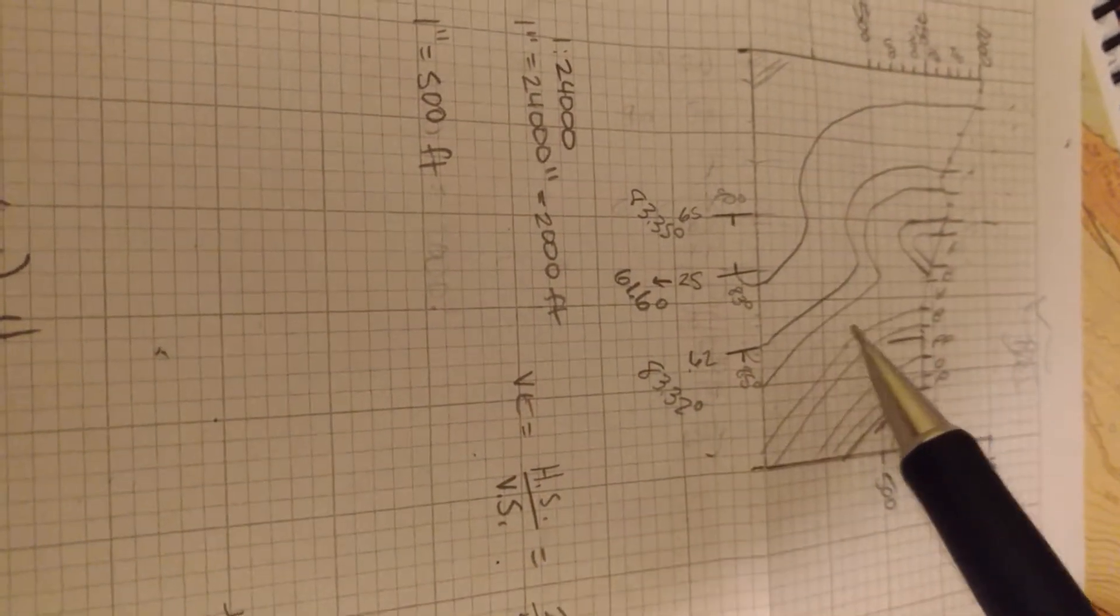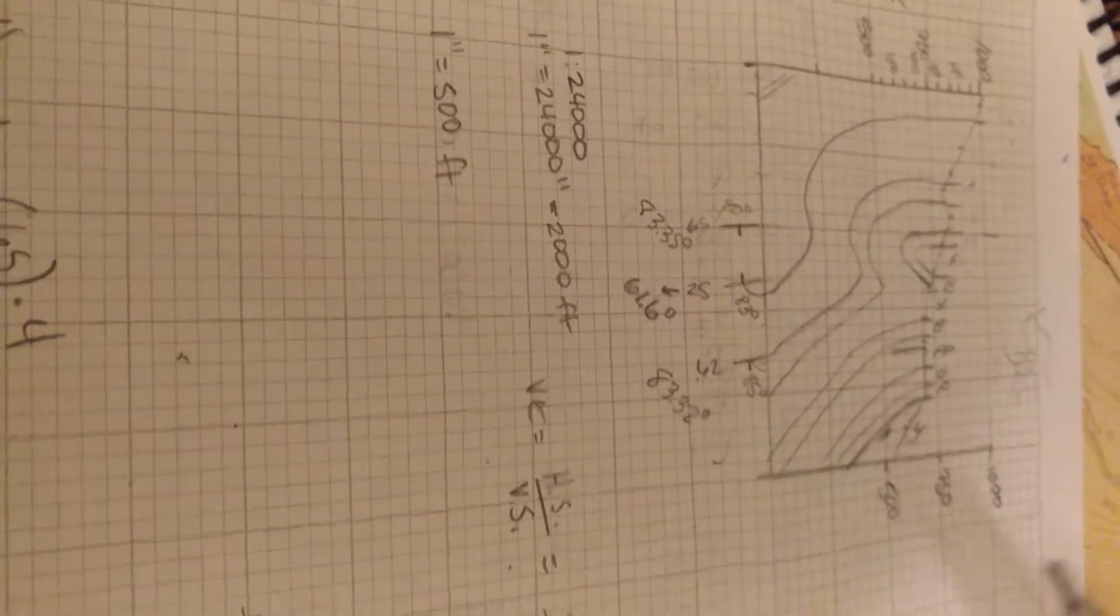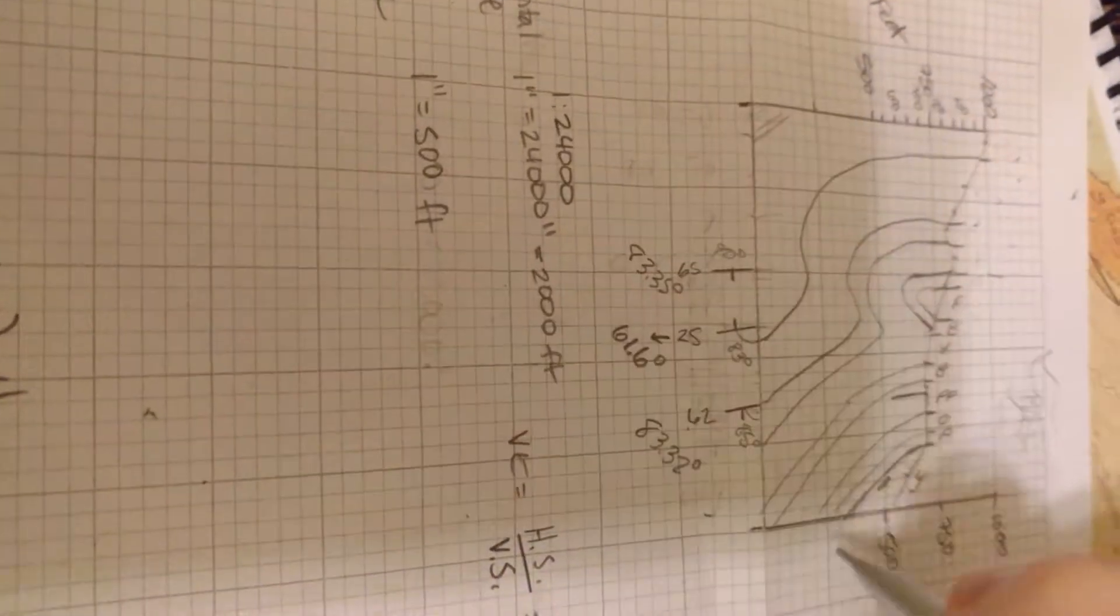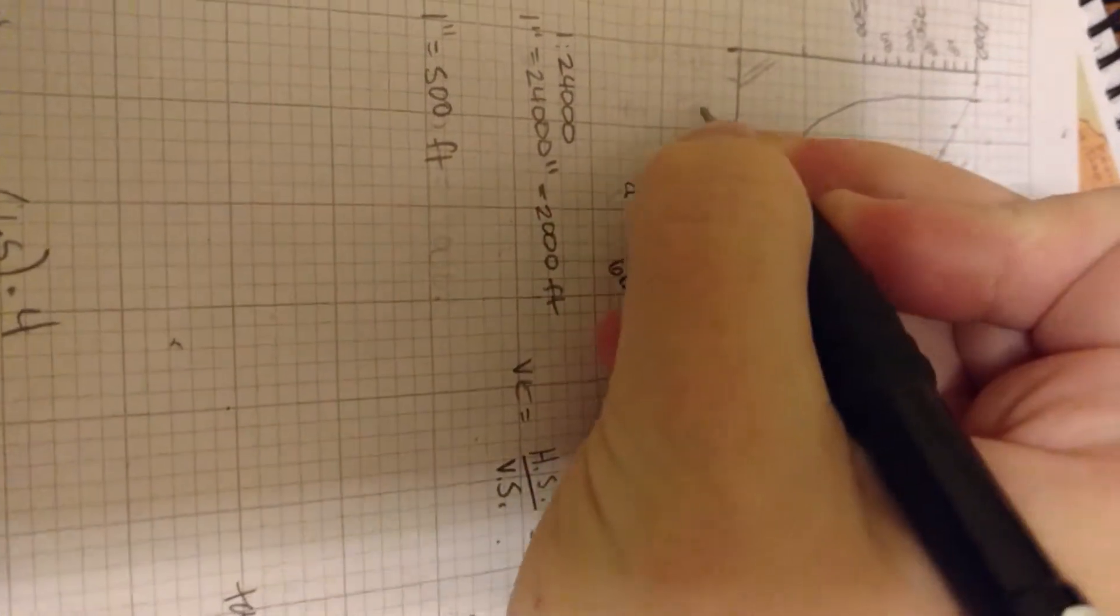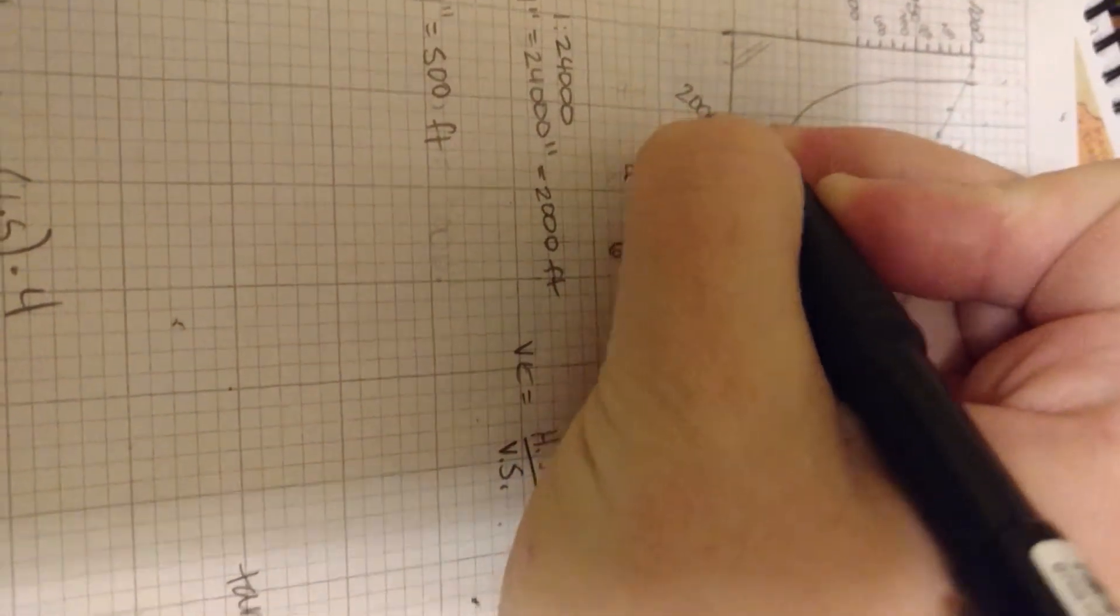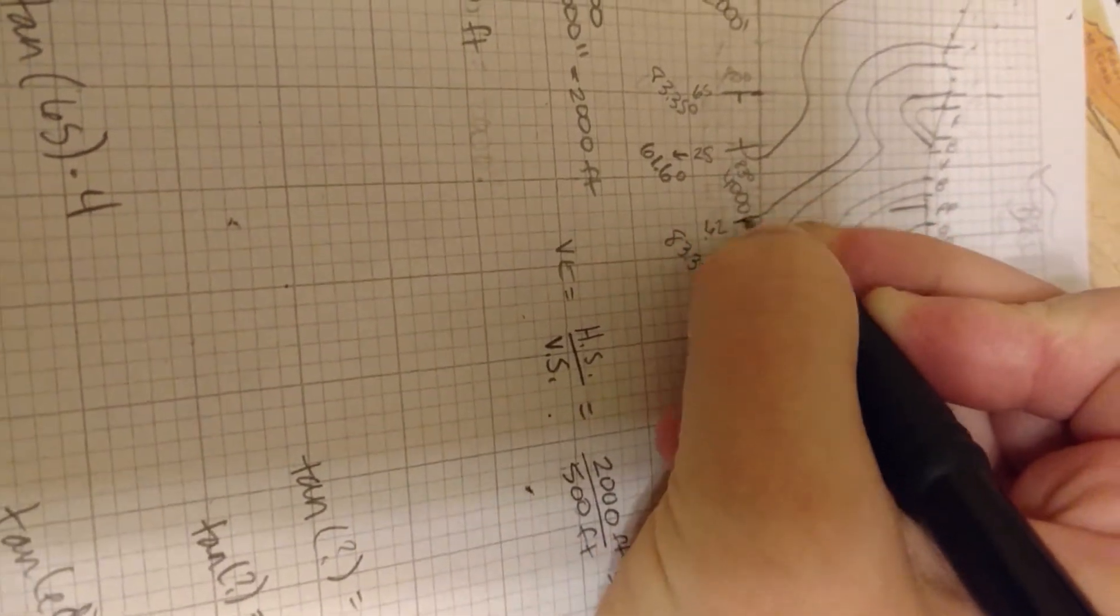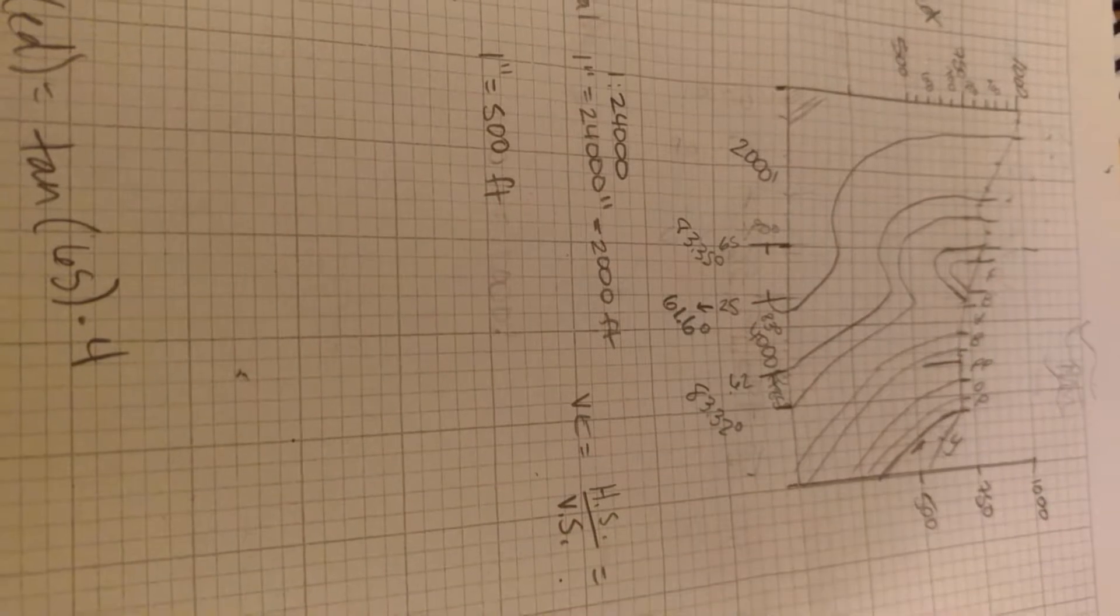Then, after we did our contacts, we went back and we looked for our strike and dips. Again, before you turn this in, you're going to erase this and you're going to fill this horizontal in with your horizontal scale. So you're going to mark that as 2,000 feet, 4,000 feet, dot, dot, dot, across there.